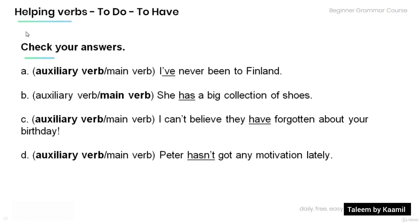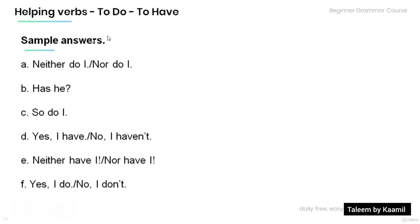Now let's check your answers. A: 'I've never been to Finland' — auxiliary verb. B: 'She has a big collection of shoes' — main verb. C: 'I can't believe they have forgotten about your birthday' — auxiliary verb. D: 'Peter hasn't got any motivation lately' — auxiliary verb. Sample short answers: 'Neither do I' / 'Nor do I.' 'Has he?' 'So do I.' 'Yes, I have.' 'No, I haven't.' 'Neither have I' / 'Nor have I.' 'Yes, I do.' 'No, I don't.' Thank you for watching this tutorial.